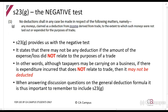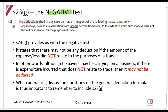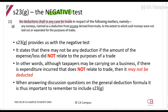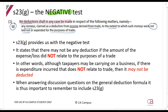Section 23g gives us the negative test — situations where you may not deduct. Its preamble states: no deductions shall in any case be made for the following matters. Section 23 is almost the opposite of the special inclusions to gross income — these are situations where an expense may meet the requirements for a deduction, but it is simply not allowed. Specifically, section 23g says you may not claim any monies as a deduction from trade income to the extent that such monies were not laid out or expended for the purpose of trade.